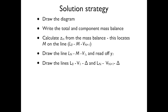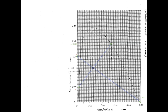The next step is to draw the lines L₀, V₁ to delta, and L_N, V_{N+1} to delta. Starting with the line from V_{N+1} through L_N to delta, the intersection of these lines is the operating point delta, which is the same for every single one of the stages.